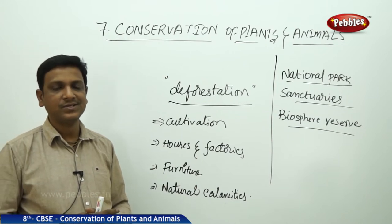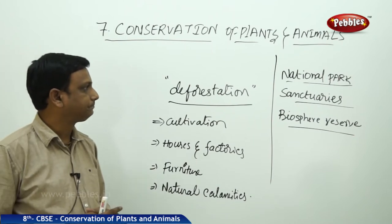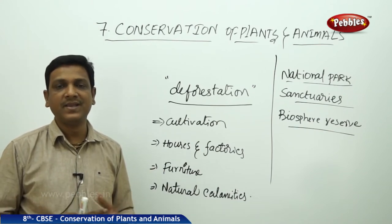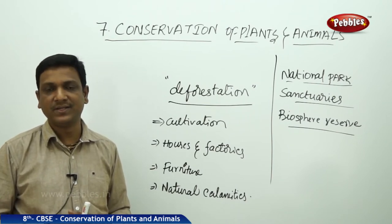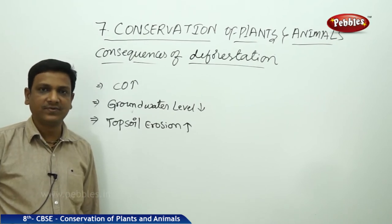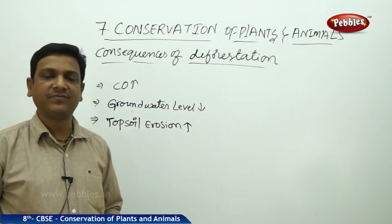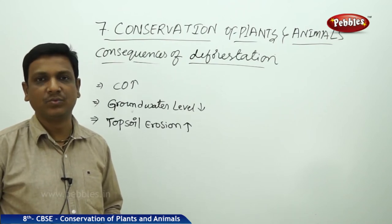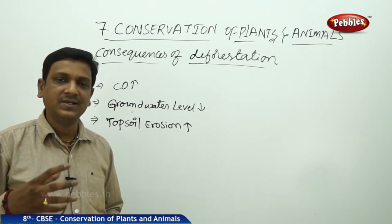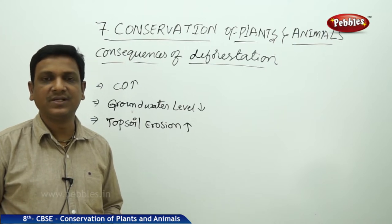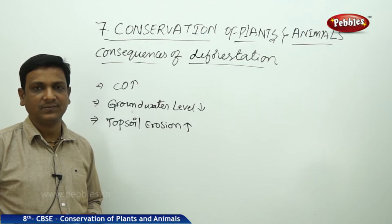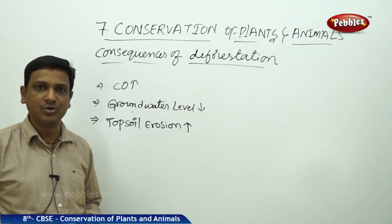In this chapter we are going to learn about deforestation, national parks, sanctuaries, which plants and animals are becoming extinct, and what care is being taken by government organizations and NGOs to conserve them. Human land demand is endless — we need more land for agriculture, industries, and many other purposes, and we are even searching for land on other planets because space on Earth is insufficient.